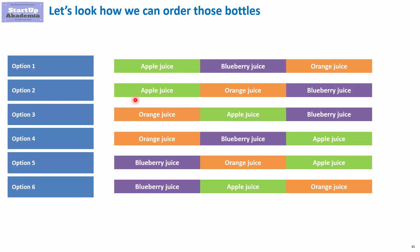The optimal option is option two, where we first produce apple juice, then orange juice, then blueberry juice. This option gives the lowest loss because apple juice is sweet, not sour, and almost colorless compared to orange and blueberry juice. If you put apple juice first, you don't have to clean the production line — you can go straight to orange juice without impacting its quality. The same logic applies to blueberry juice. If instead you started with blueberry juice, you would have to spend hours cleaning the entire production line, which would hugely impact the apple juice.